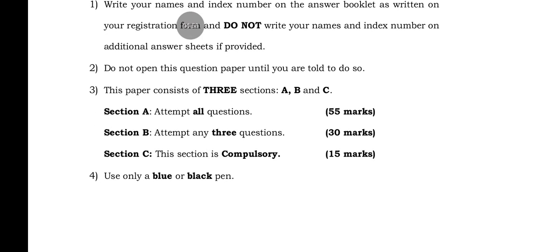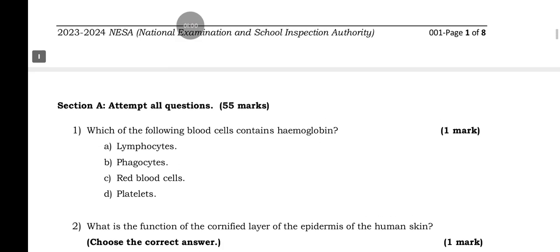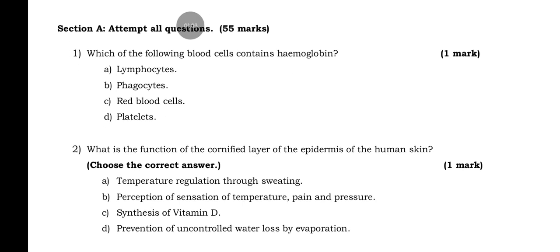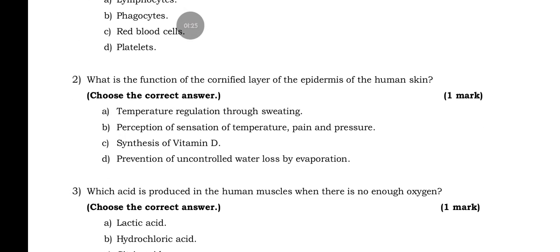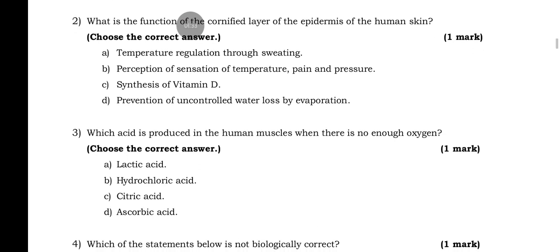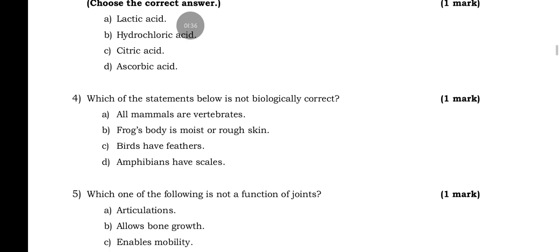Please follow the instructions. Here are some questions for section A. Section A involves attempting all questions, and the first part is multiple choice. We are asked: which of the following blood cells contain hemoglobin? And then there is a question about what is the function of the cornified layer of the epidermis of the human skin. You have to choose the correct answer only.